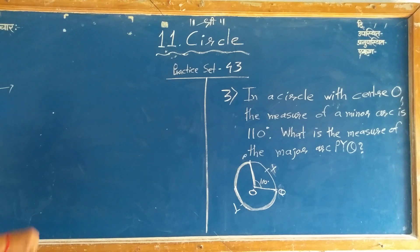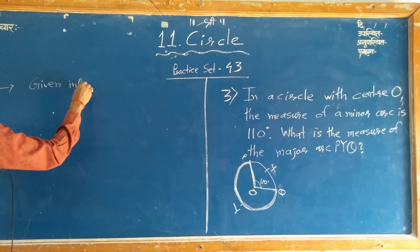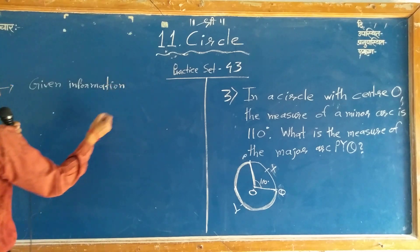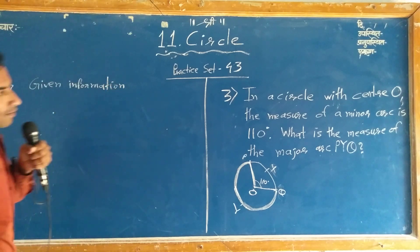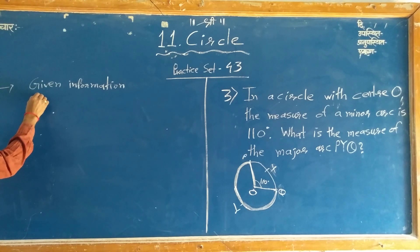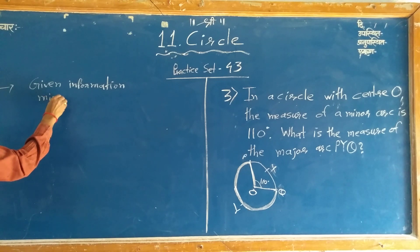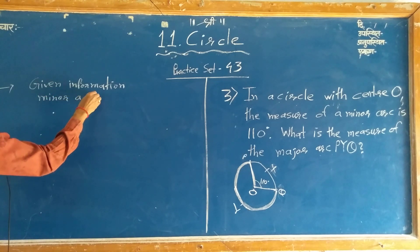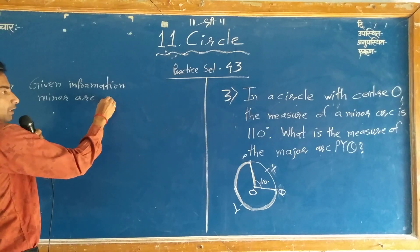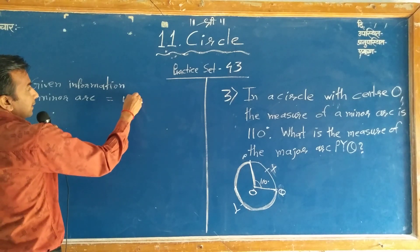What's the given information? Given information: The measure of minor arc is equal to 110 degrees.